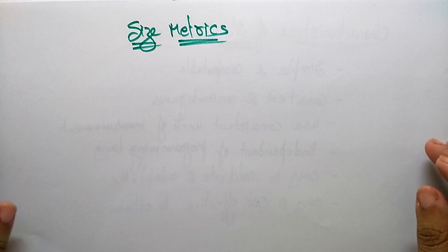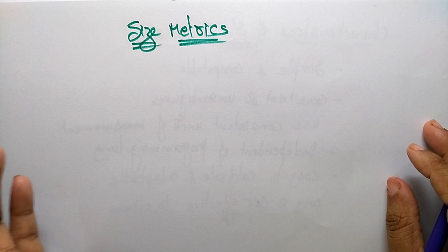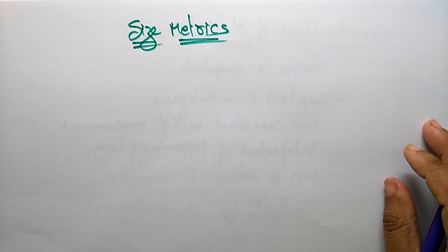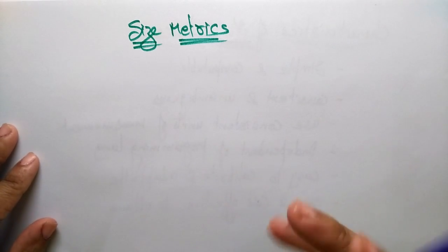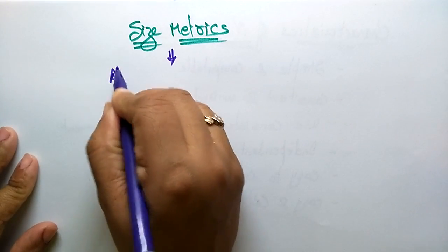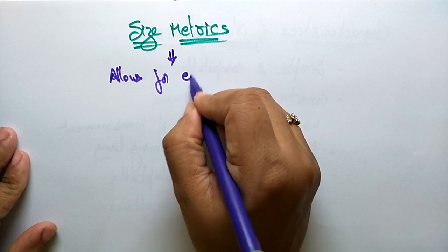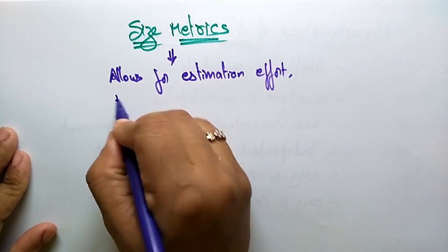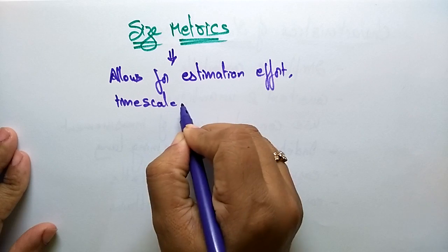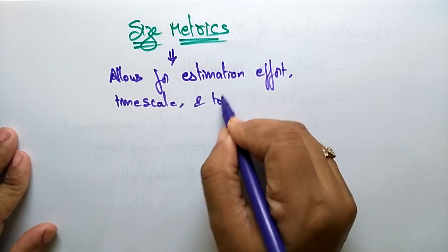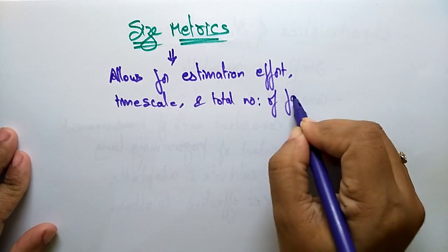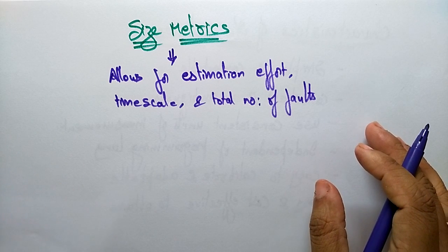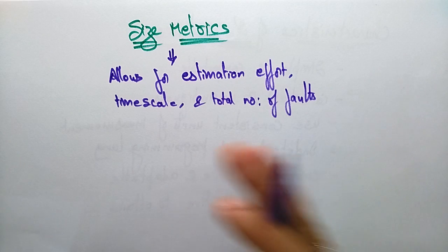Coming to the next topic: size metrics. Size metrics means we have to calculate the size of the program and the size of the process we are using in the product. The size metric allows for estimation of effort, time scale, and total number of faults that the process consists of.